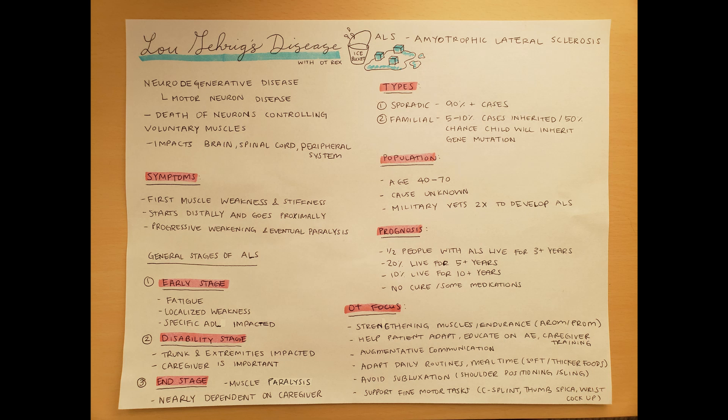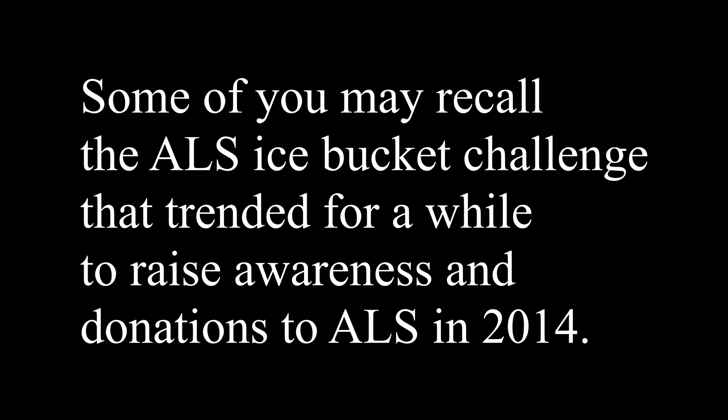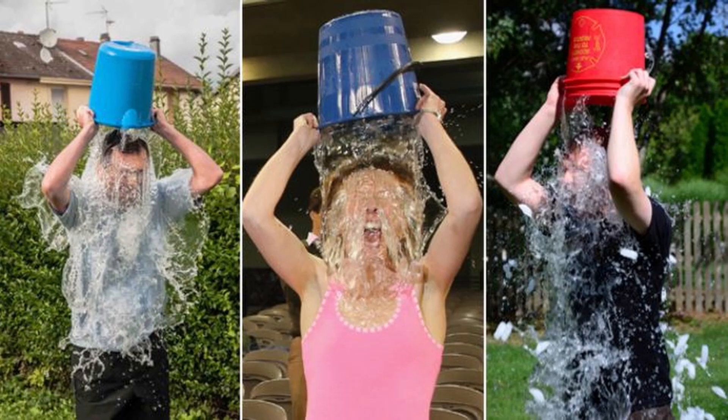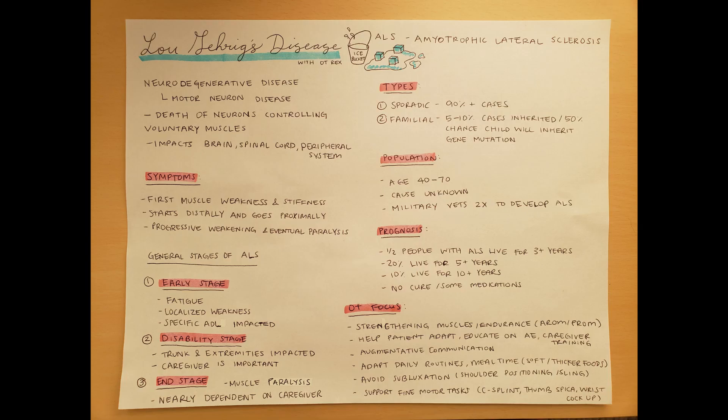ALS is a neurodegenerative disease, also known as motor neuron disease. What's happening with this condition is that there is a death of neurons that control our voluntary muscles, impacting our entire body including our brain, spinal cord, and peripheral system. There is no known cause for this and there is no cure.